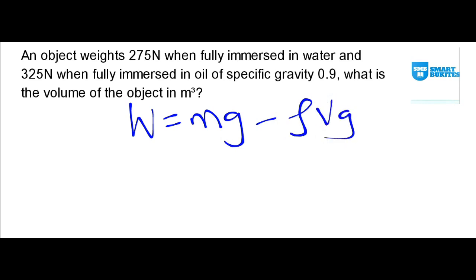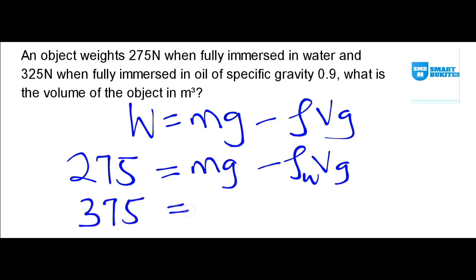The weight we are talking about is related with the density. We can insert our data into this equation and form two equations, both for immersion in water and in oil. For water, we have 275 Newton equals mg minus density Vg, and this density is the density of water. For oil, we have 325 Newton equals mg minus the density of oil times Vg.